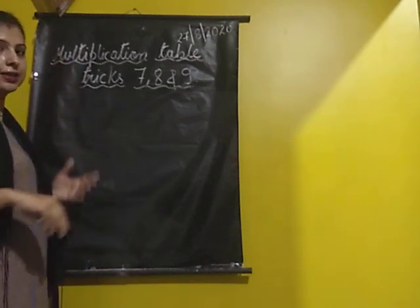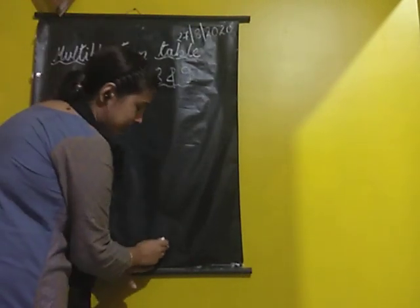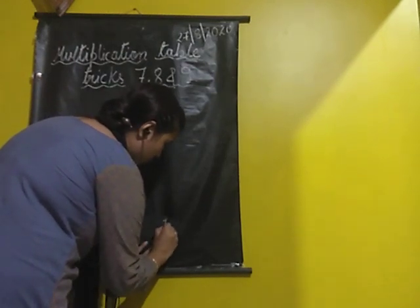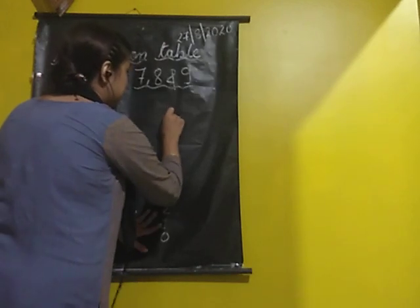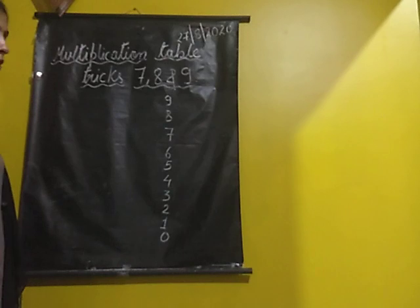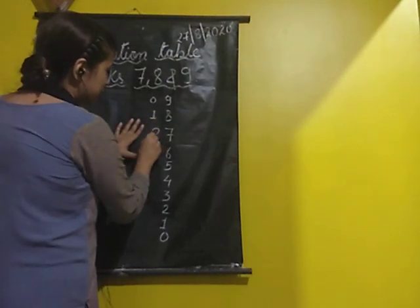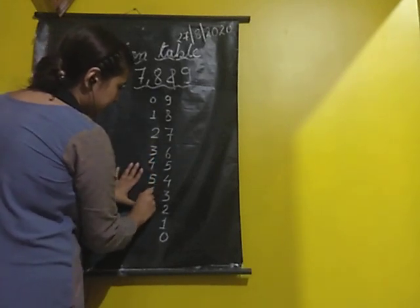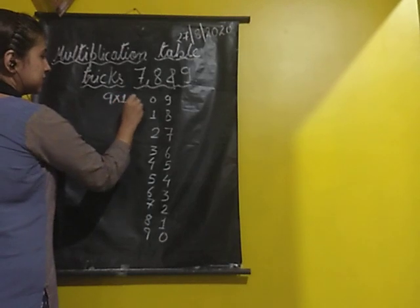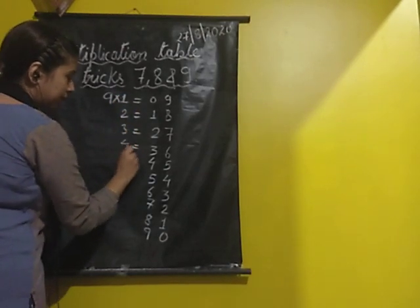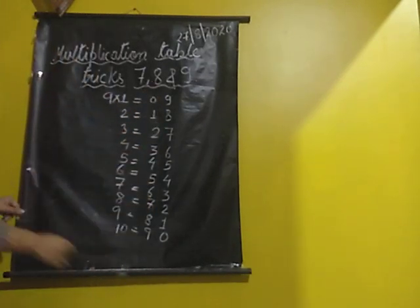Now the last one — the multiplication table of 9. This one is very easy. In the ones place, we start from the top with 0 and write straight down: 0, 1, 2, 3, 4, 5, 6, 7, 8, 9. Then in the tens place, we write the same numbers going upward: 0, 1, 2, 3, 4, 5, 6, 7, 8, 9. And here we get the table of 9.